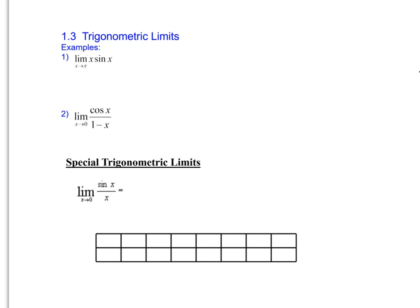Welcome to AP Calculus for East Aurora High School. Today we're going to look at some trigonometric limits. Our first couple of examples are going to use direct substitution. For the first one, we want the limit as x approaches pi of x sine of x. Substituting pi for x, we have pi times the sine of pi. We know that sine of pi is equal to 0, so pi times 0 gives us a limit of 0. If direct substitution is possible, we start with that method.